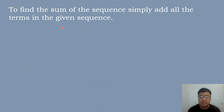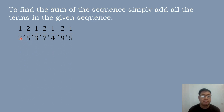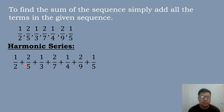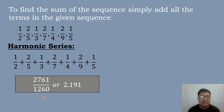To find the sum of the harmonic series, we add all the terms in the given sequence: 1/2 + 2/5 + 1/3 + 2/7 + 1/4 + 2/9 + 1/5 = 2,761/1,260 or approximately 2.191. So the sum of the harmonic sequence is equal to 2.191.